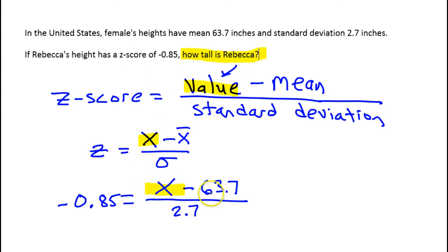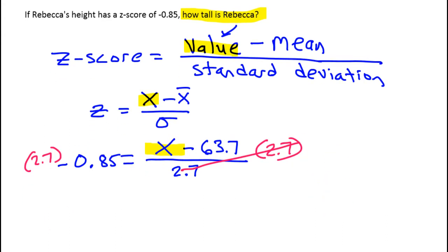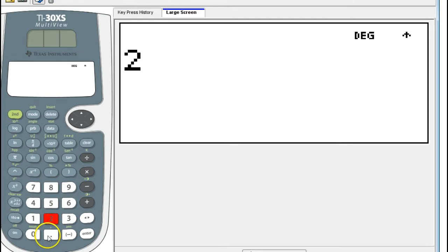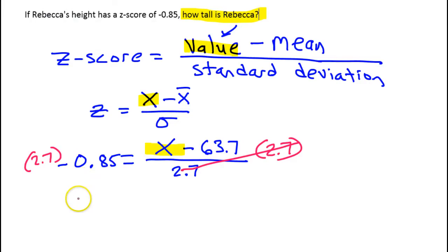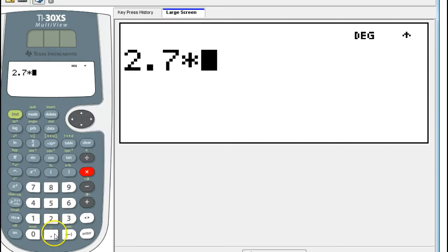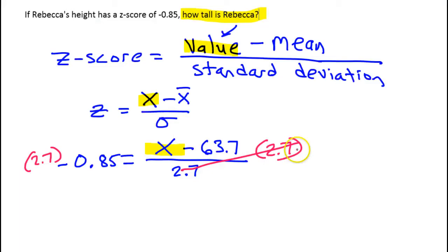So I'll just go ahead and put this x here. All I have to do is solve this equation for x, and that will be Rebecca's height in this problem. So this is really an arithmetic problem. To solve this, I would multiply both sides by 2.7. That's going to cancel these out. So that's negative 2.295.